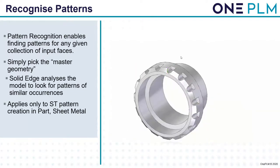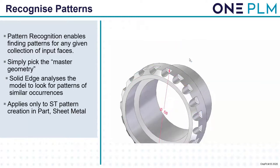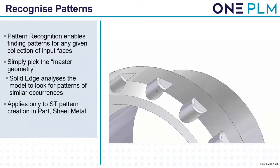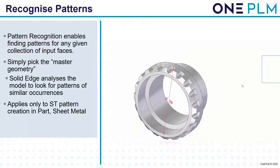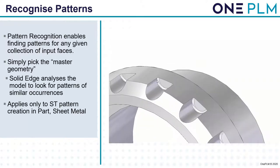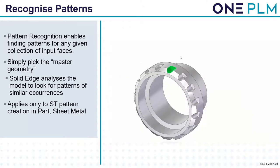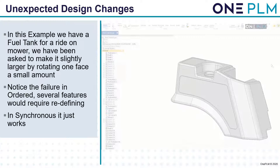Recognize patterns enables finding patterns for any given collection of input faces. Simply pick the master geometry from one of the pattern instances and Solid Edge looks at the model to find patterns of similar occurrences. This applies only to synchronous technology pattern creation in part and sheet metal. Once we've found that pattern we can also go and change it — very useful if you want to show something with more or fewer treads, like a tire model.